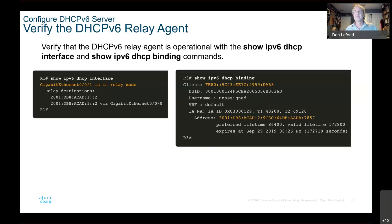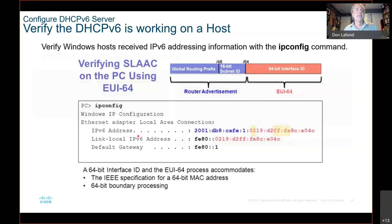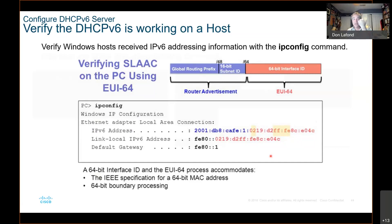Verify the DHCPv6 is working on a host. On a host you can go to ipconfig and see the address. Remember, earlier I told you you would see FFFE in the middle of the MAC address. Here is 24 bits on the right-hand side and 24 bits on the left-hand side — that's 48 bits of a MAC address — and FFFE in the middle. That's EUI-64. If you want to see if it's EUI-64, look for that FFFE in the middle.